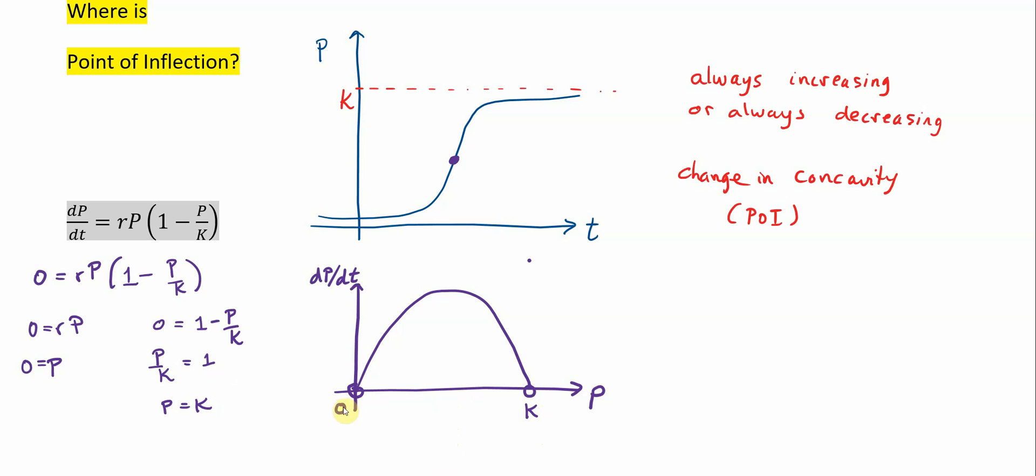And the halfway point between zero and K is K over two. And so at this point right here.